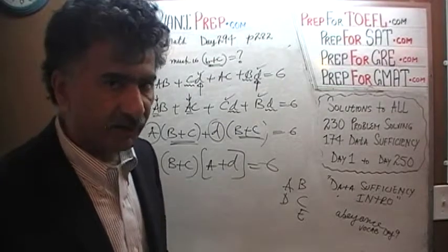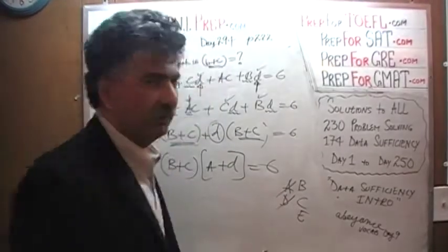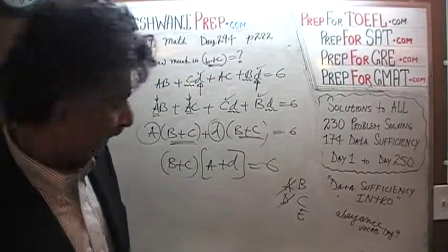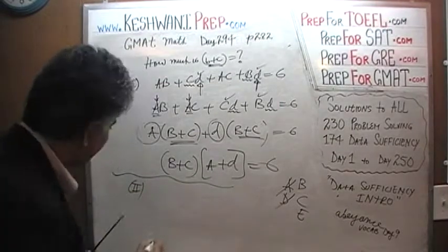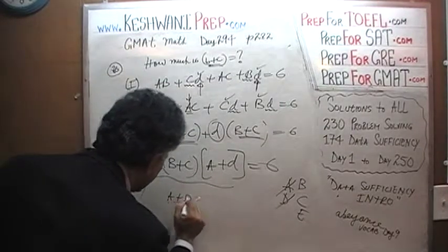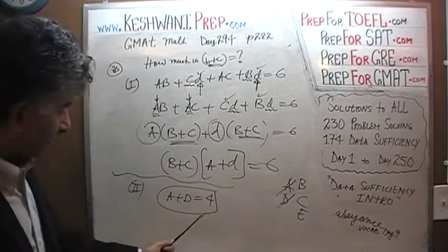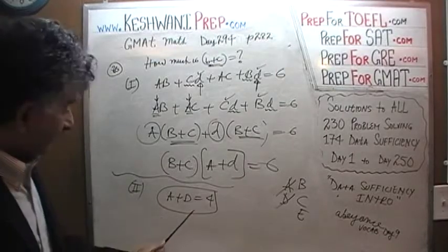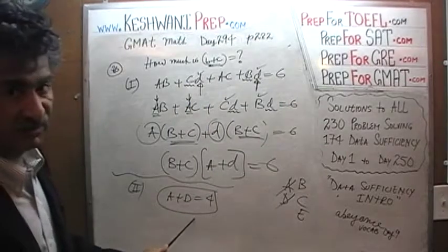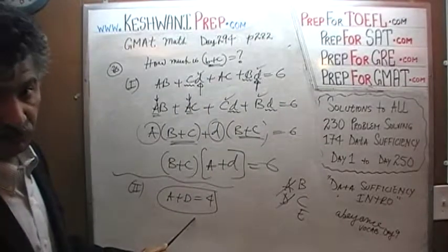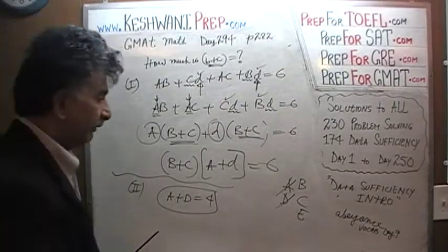Now that we have established that the first statement by itself is not enough, we know the answer cannot be A or D — it would have to be B, C, or E. The second statement tells us that A plus D is 4. However, simply knowing that A plus D is 4 does not by itself enable us to answer what B plus C is. The second statement by itself is not enough — it is useful information, but not sufficient alone. The answer cannot be B.